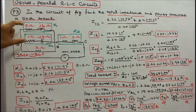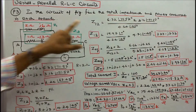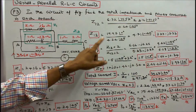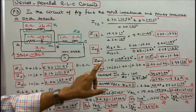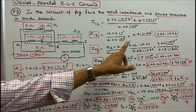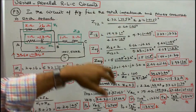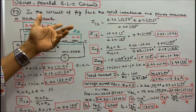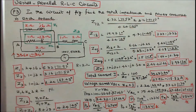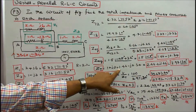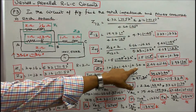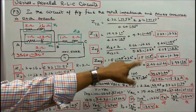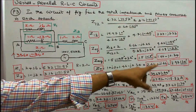Z12 is in parallel with the 2-ohm resistor. The equivalent impedance = Z12·2 / (Z12 + 2) = 1.5∠−13° in polar form, or 1.46 − j0.34 ohms in rectangular form. I know the equivalent impedance and Z3, so total impedance ZT = (1 + j2) + (1.46 − j0.34) = 2.46 + j1.66 ohms, or 2.97∠34° in polar form.